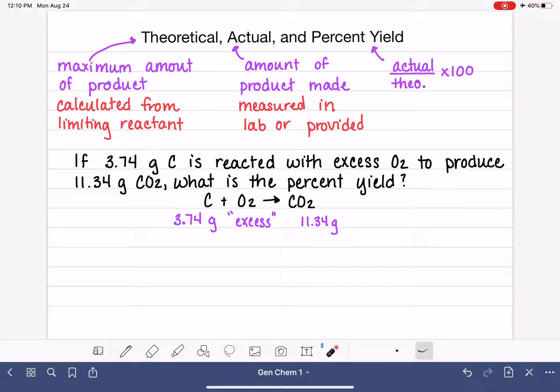So first, let's talk about the excess O2. Whenever you see the term excess in one of these types of problems, this is just a hint that the problem is giving you, letting you know that this particular reagent is not the limiting reactant. Excess means exactly what it sounds like. It's just there in excess quantity. So we have more than enough O2. Because it's not the limiting reactant, that means just by default that the carbon is the limiting reactant.